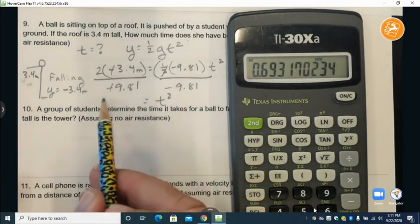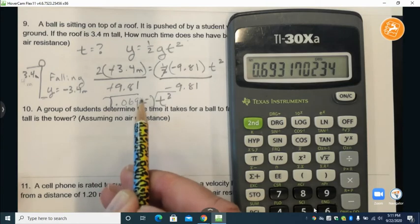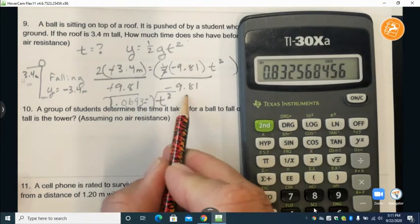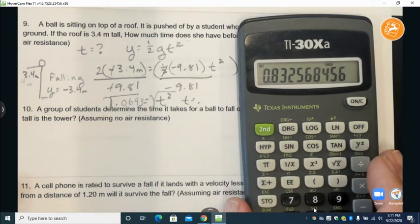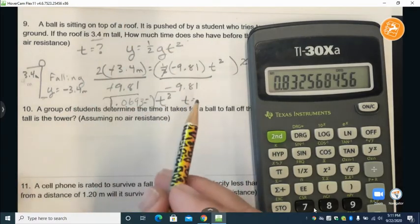Don't forget we need to take the square root of that and so the time it takes equals 0.832 and if we want to put that to 2 significant figures, so that's what our problem has here, we go 0.83 seconds.